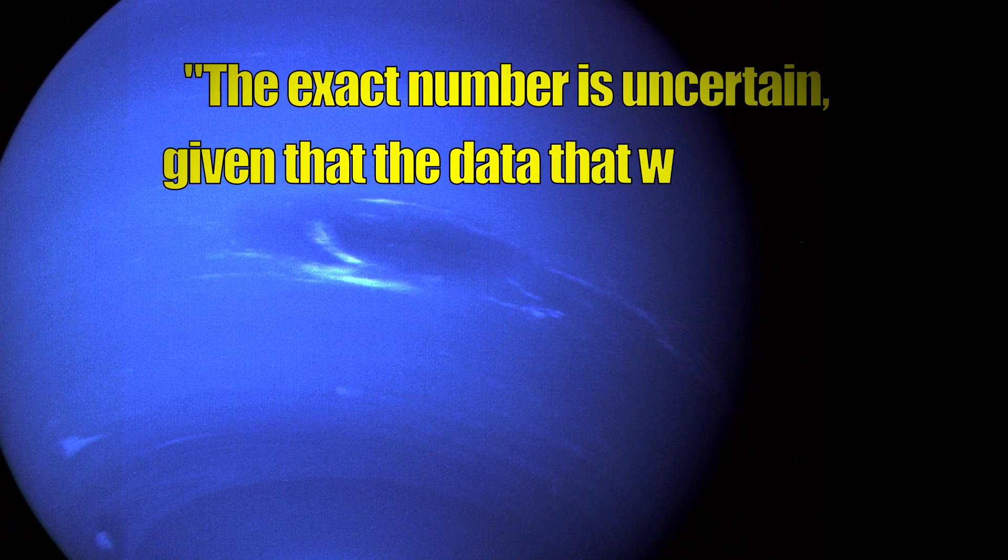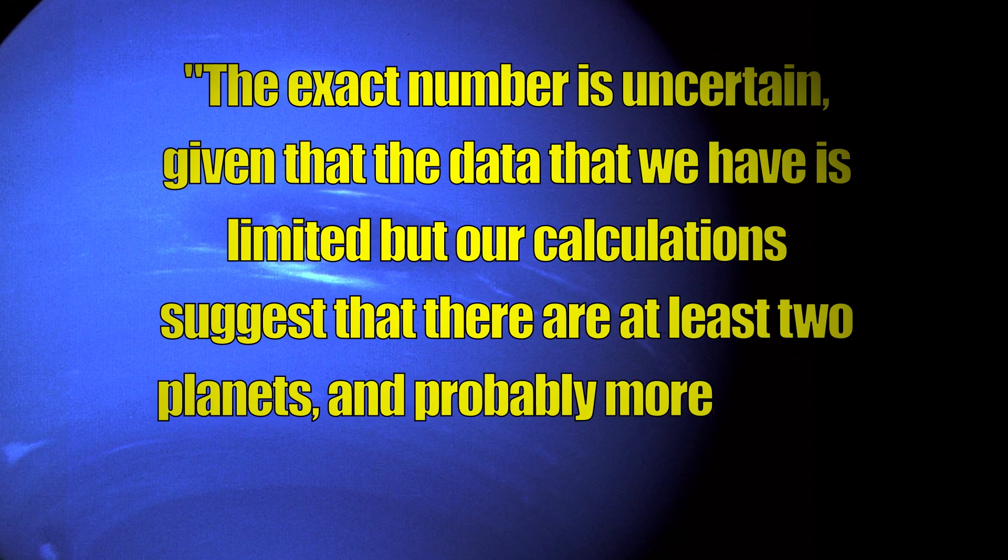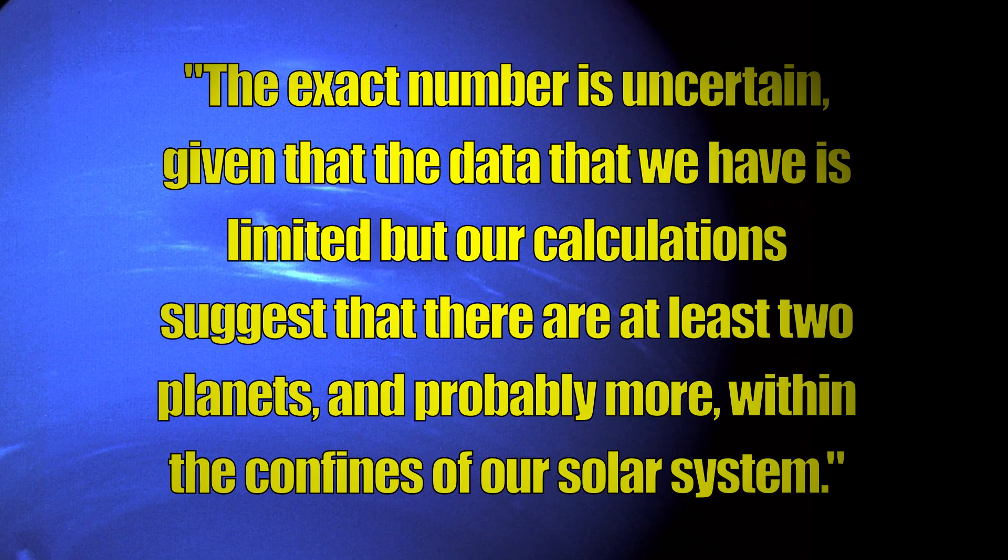A new study claims that the existence of planet X and Y, along with other ETNOs, is the most probable explanation, saying, The exact number is uncertain, given that the data we have is limited, but our calculation suggests that there are at least two planets, and probably more, within the confines of our solar system.